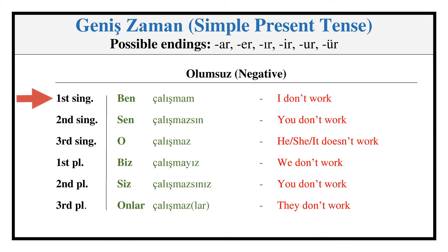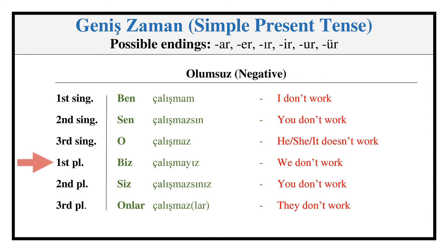Aorist — Negative: ÇALIŞMAM, ÇALIŞMAZSIN, ÇALIŞMAZ, ÇALIŞMAYIZ, ÇALIŞMAZSINIZ, ÇALIŞMAZLAR.